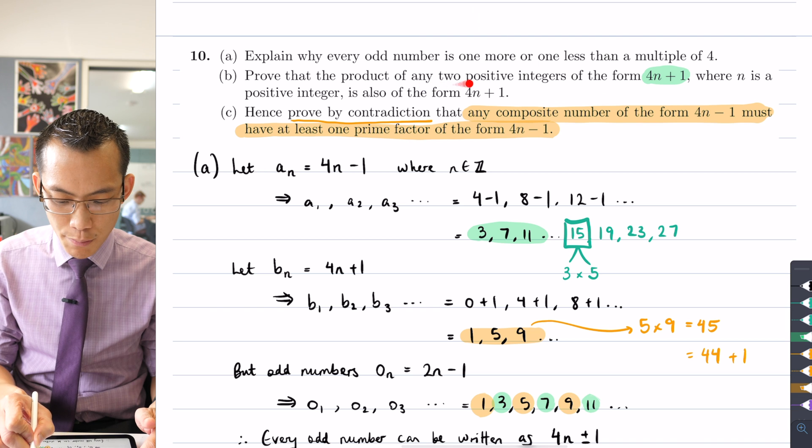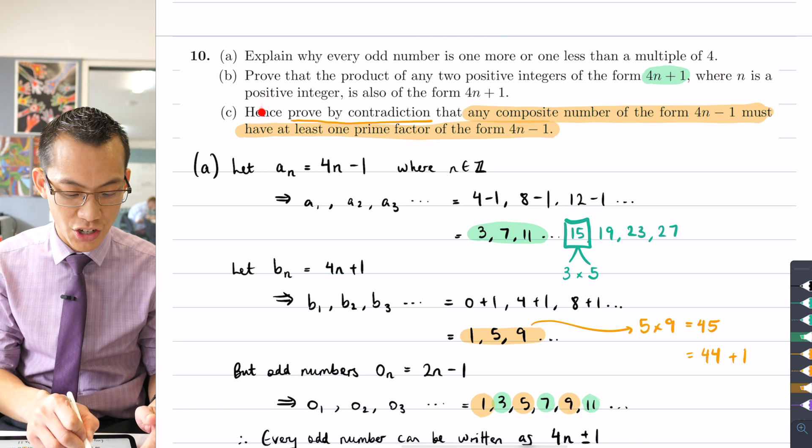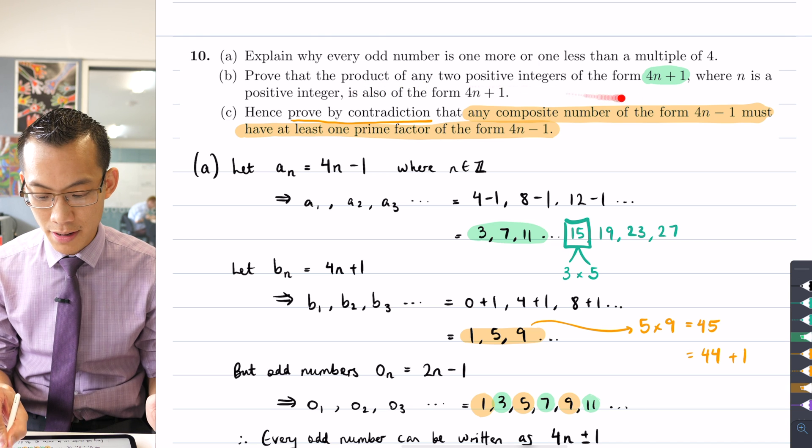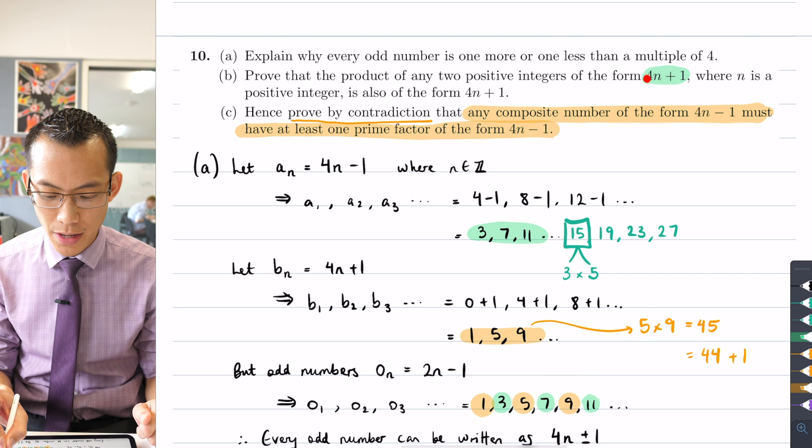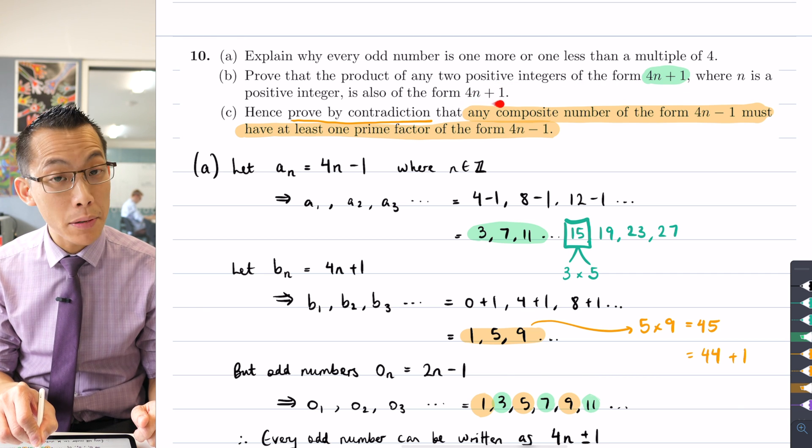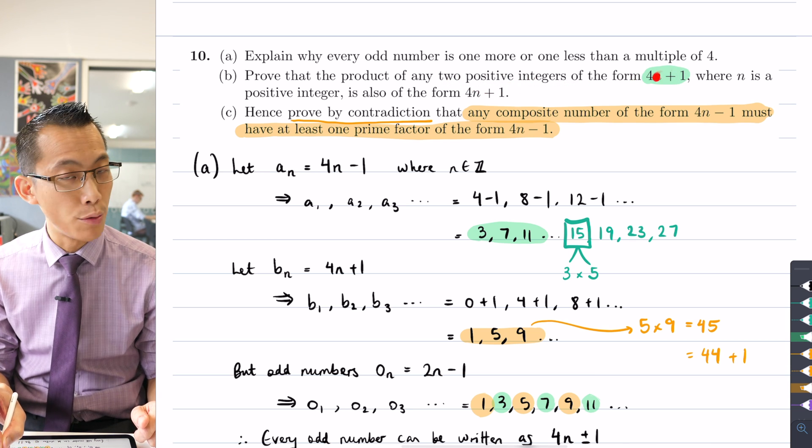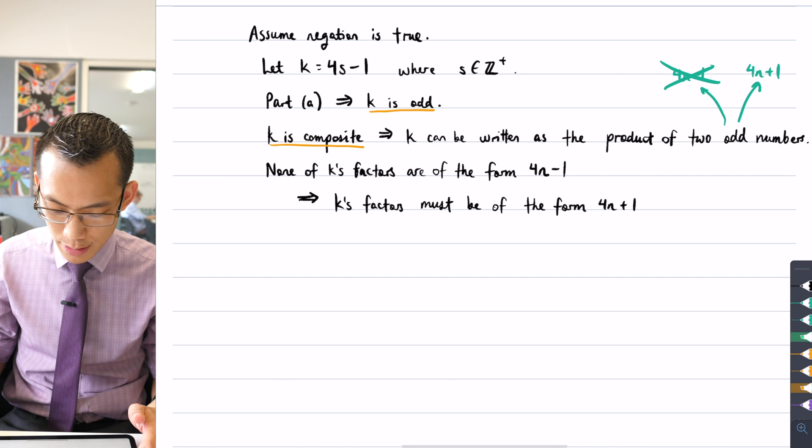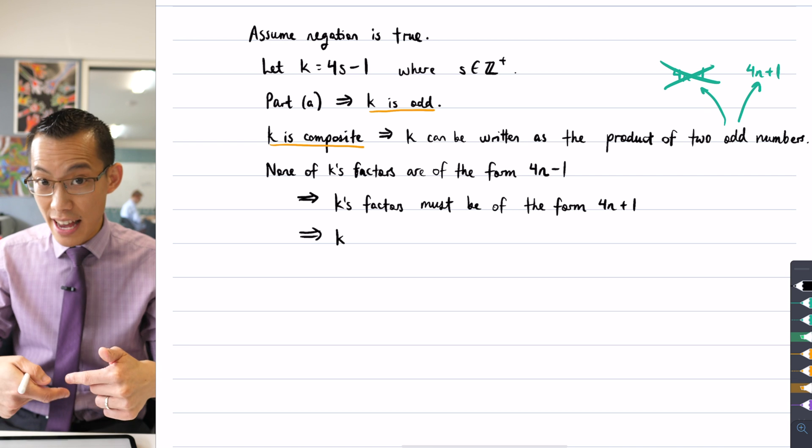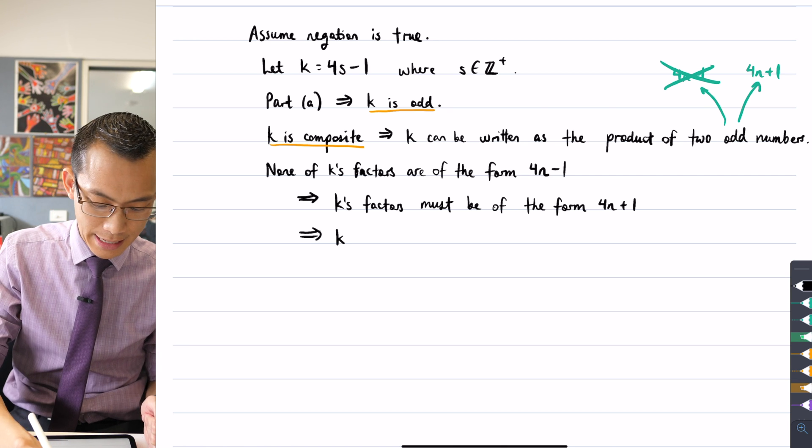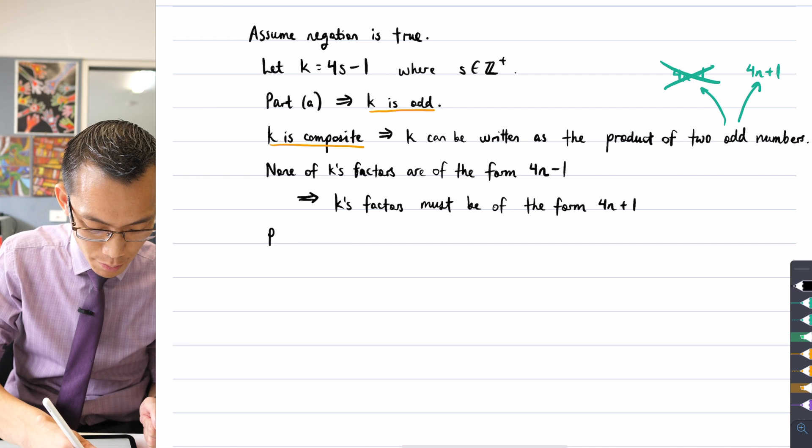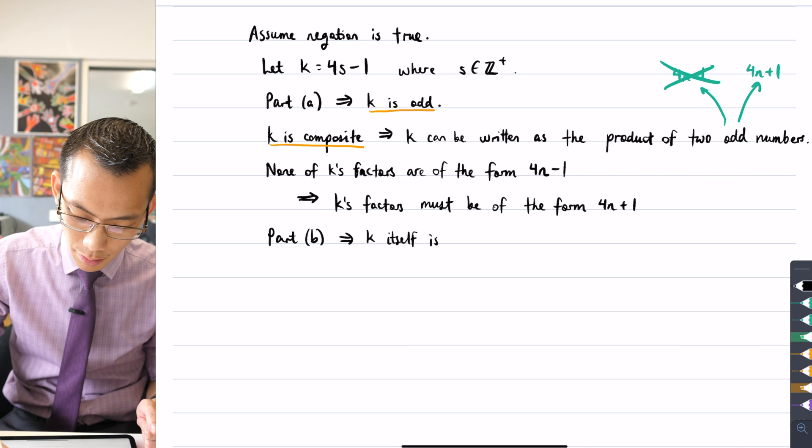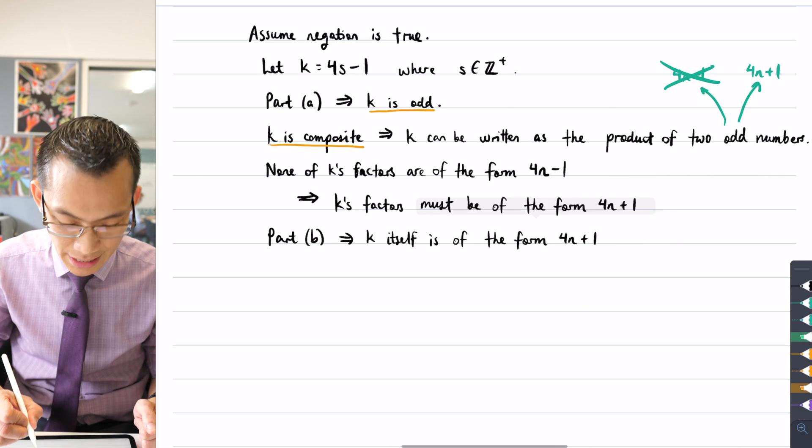And this implies that the factors all have to be 4n plus 1. K's factors must be of the form 4n plus 1. Now this is really good because now I'm starting to not just use part A, but now I actually can invoke part B. What does part B have to do with any of this? It was prove that the product of any two positive integers of the form 4n plus 1 is also of that form. That's exactly the situation I have here.